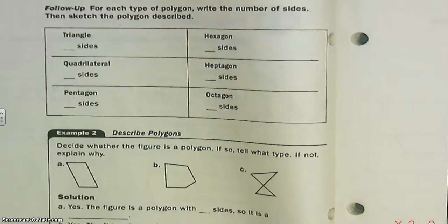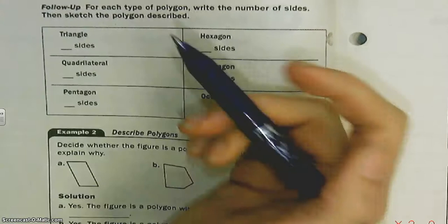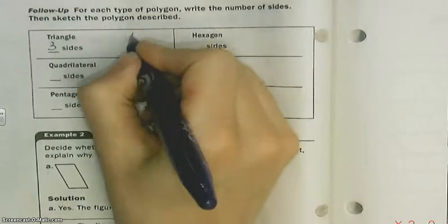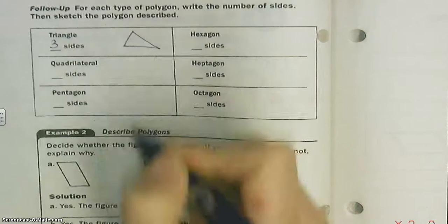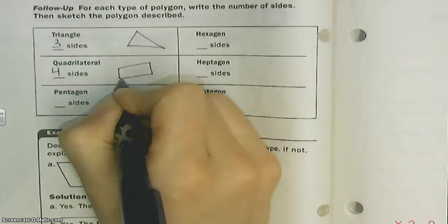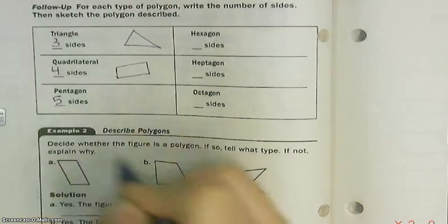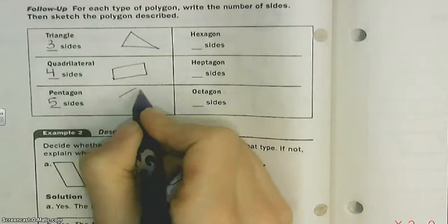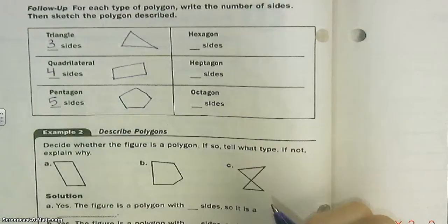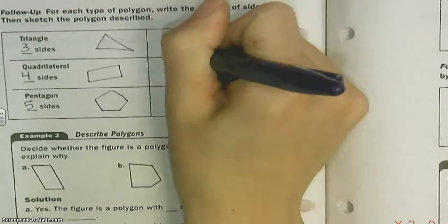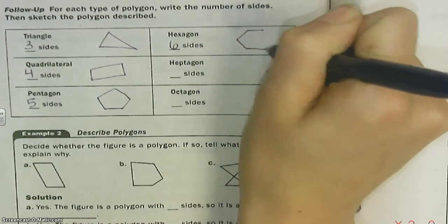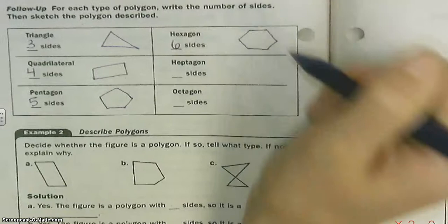For each type of polygon, write the number of sides and sketch the polygon described. Well, we already know that a triangle has three sides—there's an example. A quadrilateral has four. Pentagon has five. Pentagons kind of look like houses a little bit. Hexagon has six. Let's see if I can do that. Hey, not so bad.